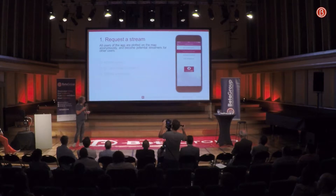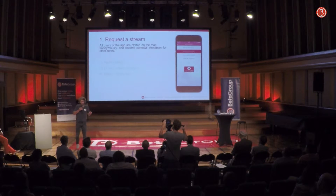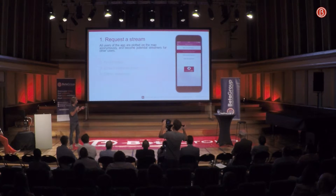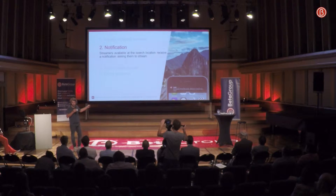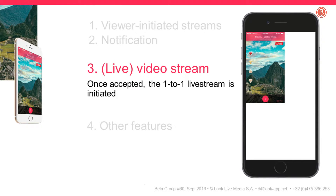You can add a message before sending your request saying what you want to see — for example, 'anything interesting to see?' This will initiate a push notification to all the people at the search location, in this case Machu Picchu. When they accept, they will send you a live video of the location.